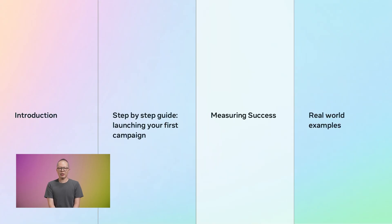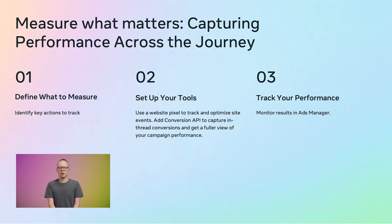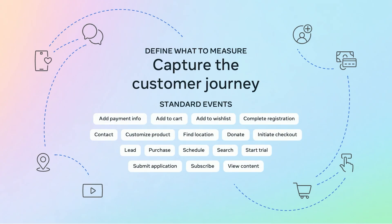Let's talk about how to measure success. Measurement starts with three simple steps: define what to measure, set up your tracking, and monitor performance in Ads Manager. Customer journeys today are complex and non-linear, so the first step is to identify the key actions you want to track. This may include viewing a product, adding to cart, completing a purchase, or just starting a conversation. Make sure these events are properly mapped to standard or custom events using the Meta Pixel, which helps Meta understand user behavior and enables better targeting, optimization, and reporting.